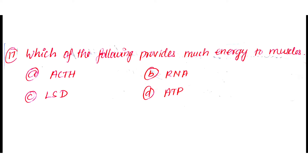Question number 17: Option A: ACTH. Option B: RNA. Option C: LSD. Option D: ATP. The answer is Option D: ATP.